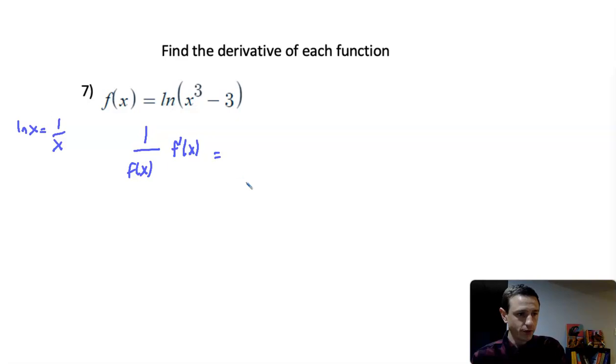In this problem I'm going to have 1 over the function x to the third minus 3. I don't do anything with that, just like when we're taking the derivative of something like e to the 3x, we would do e to the 3x times the derivative of 3x, which is just 3. We use that same concept with exponential and natural logs.